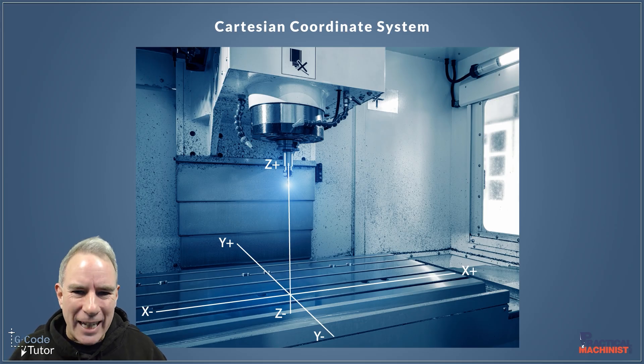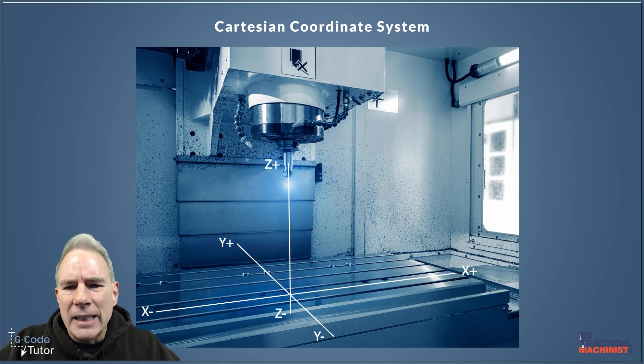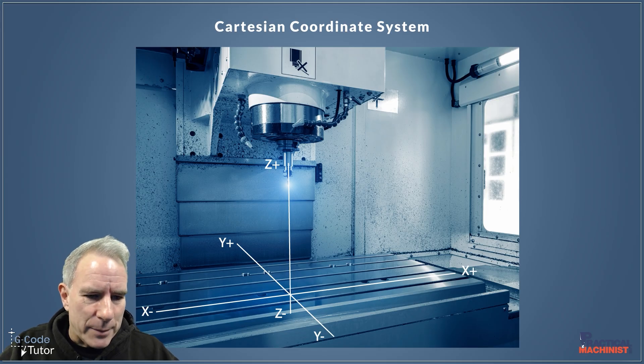Y plus generally takes our table away from us if we're dealing with a vertical machine. And X minus is to the left, X plus to the right. So that's just a basic standard vertical machine, milling machine that the axes represent there.